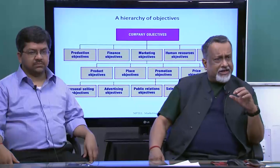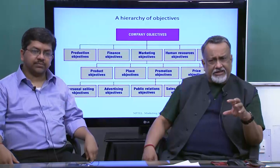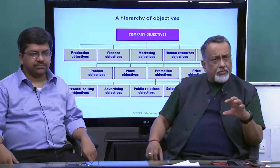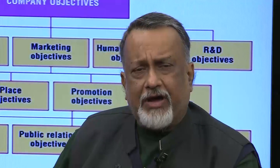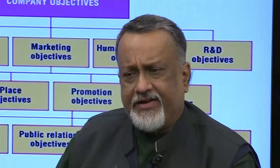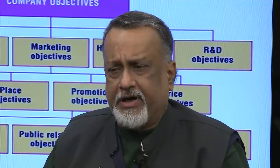If we look at the company objectives — those three objectives we just discussed with respect to marketing objectives — and put them in the broader framework of company objectives, then as you see on your screen, you have production objectives, finance objectives, human resource objectives, and R&D objectives. So marketing objective is a subset of the overall set of corporate objectives.